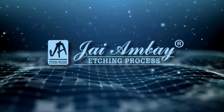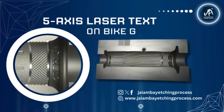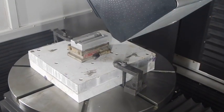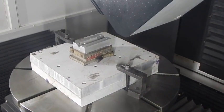We are Jai Ambe etching process. In today's manufacturing world, where things are made with great care and new ideas, making bike grip molds has gotten better.